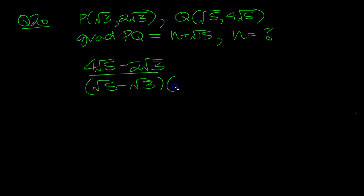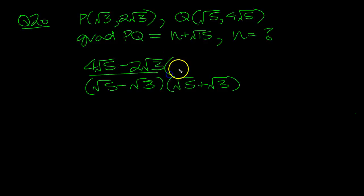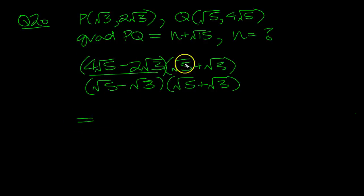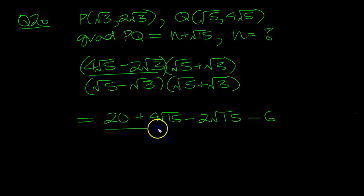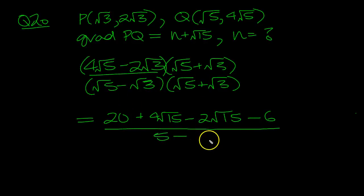So let's rationalise the denominator — root 5 plus root 3, top and bottom. So let's see what we get: 4 times 5 is 20, then 4√15, minus 2√15, minus 6, over 5 minus 3.